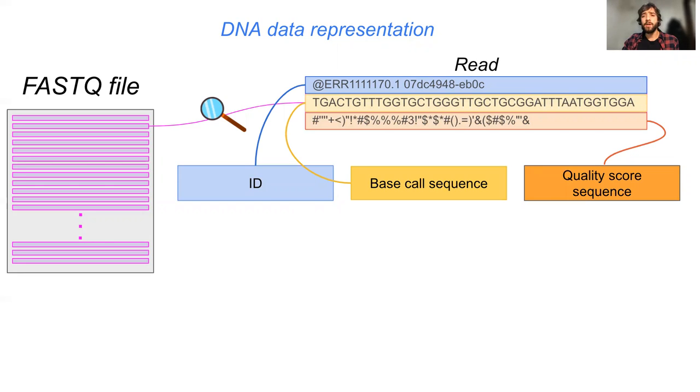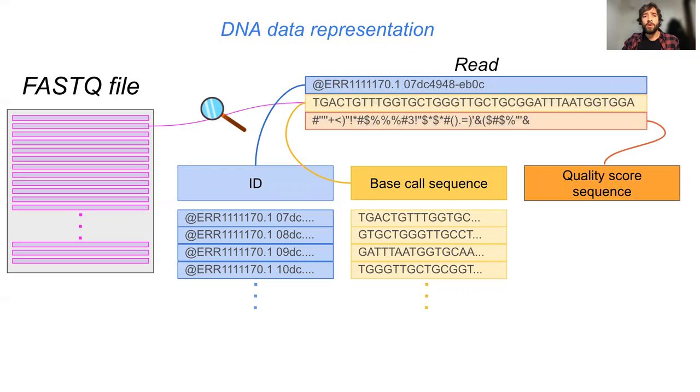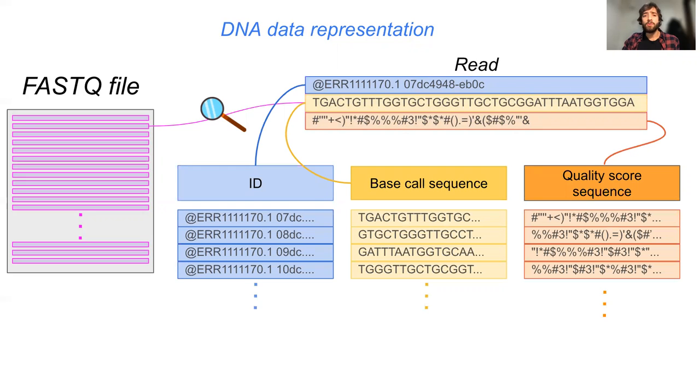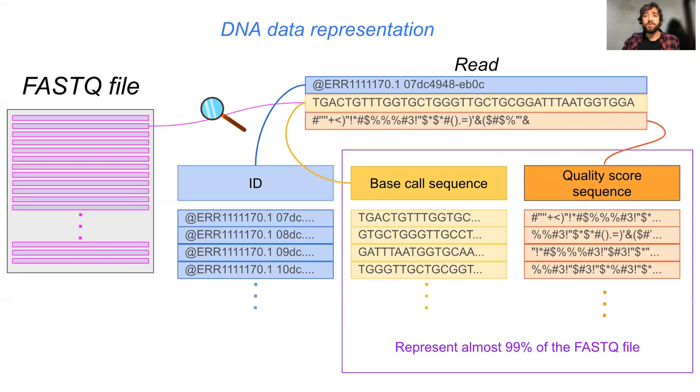In other words, each FASTQ file can be separated into three sets: one of IDs, one of base call sequences, and one of quality score sequences, where both base call and quality score sequences by far occupy most of the space.